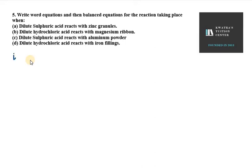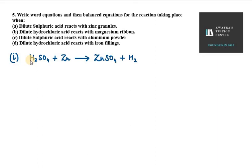The first reaction is dilute sulfuric acid, which is H₂SO₄, reacting with zinc granules. So we add zinc to it. H₂SO₄ reacts with zinc and we get zinc sulfate and H₂ gas is released. We have one metal and one acid, so we get one salt and hydrogen gas.